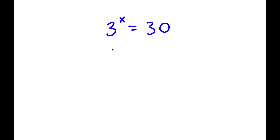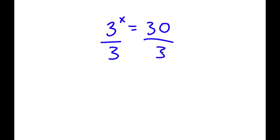In this problem, I have 3 to the power of x is equal to 30. To solve this problem, I'm going to first start by dividing both sides by 3. So now I have 3 to the power of x over 3 is equal to 30 divided by 3, which is equal to 10.